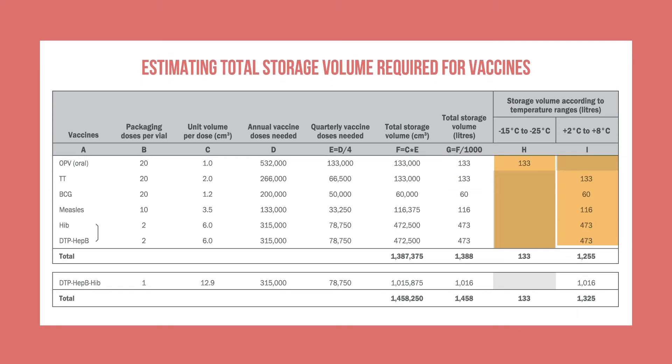Copy the total volume for each vaccine and diluent to the appropriate temperature range. With the exception of OPV, all the vaccines in this list should be stored between 2 and 8 degrees Celsius. Finally, add the volumes together to get the total storage volume required for each temperature range. This will help you determine your needs for different types of storage such as vaccine refrigerators and freezers. In this example, the quarterly delivery of vaccines will require at least 133 liters of freezing capacity and 1,325 liters of refrigeration capacity.